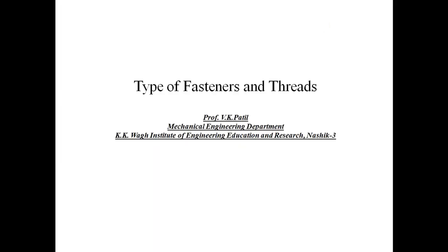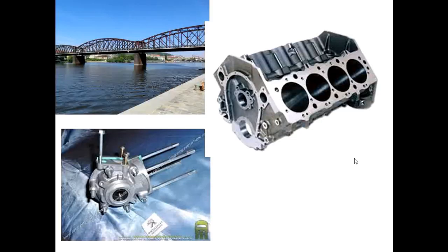Dear students, welcome to this session. Today we discuss the different types of fasteners used in mechanical systems. Different types of threads are also present for different applications. Many examples in our surroundings relate to the assembly of two different components using fasteners. For example, the first figure indicates a bridge, which may be manufactured using welding joints or fasteners.